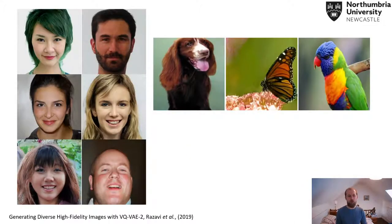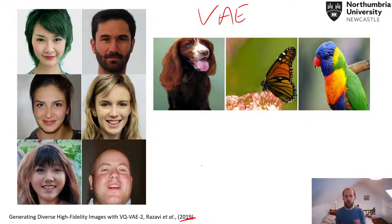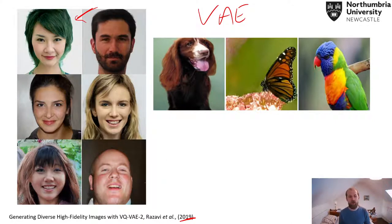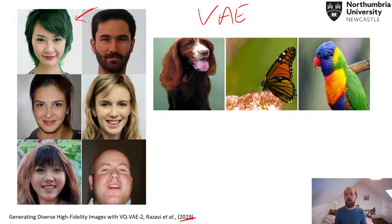Since then, something called variational autoencoders have been proposed to give more variety — this is just VAE. This was from a paper on arXiv in 2019, and you can see you get really amazing images with quite a lot of variation. For example, here you've got a girl with green hair, which is quite difficult to generate because there are not many examples of that in the training data. You also have someone looking upwards, whereas most images in the training data are forward-facing. I'm not going to go into detail with VAEs because they're quite mathematically complex and beyond the scope of this course.